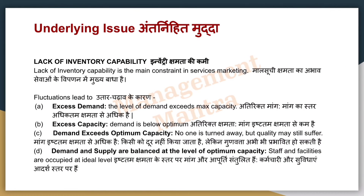There are underlying issues when we don't meet demand. First, lack of inventory capacity — when our inventory capacity is very low, we don't give proper services, and demand fluctuations increase the gap. For example, parlors or salons increase their demand during wedding season. Second, excess capacity — if you don't have sufficient demand, you may have 10-15 people sitting idle during off-season, increasing costs without profit. Third, demand exceeds optimum capacity — where demand is more than your capacity.